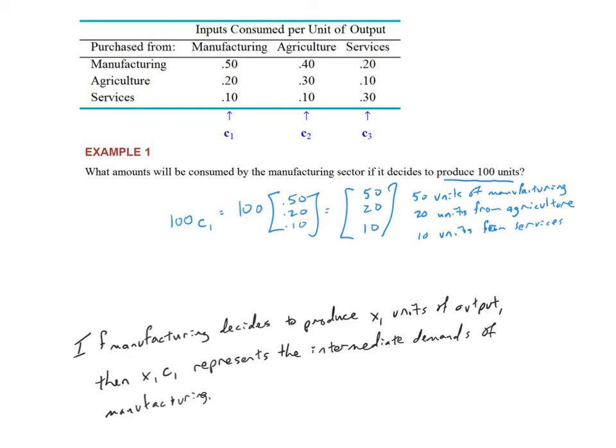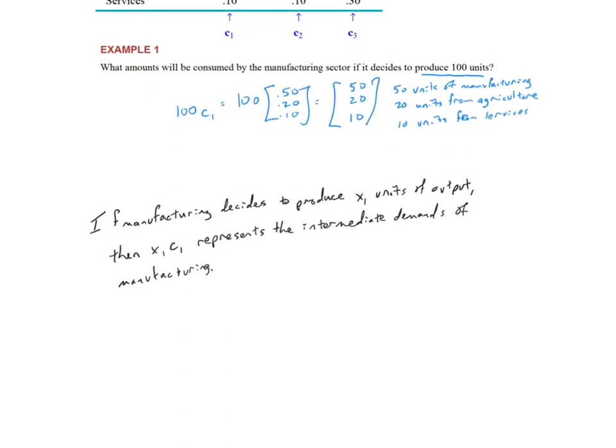So now we've got this sentence popping on the screen here. Taking it in the more general terms, if the manufacturing sector decides to produce x1 units of output, then x1 times c1, that vector, represents the intermediate demands of manufacturing. So what I mean by that is that x1 c1 will be consumed in creating x1 units of output. In order to put out x1 units of output, I need to consume x1 times c1. Hopefully that makes sense.